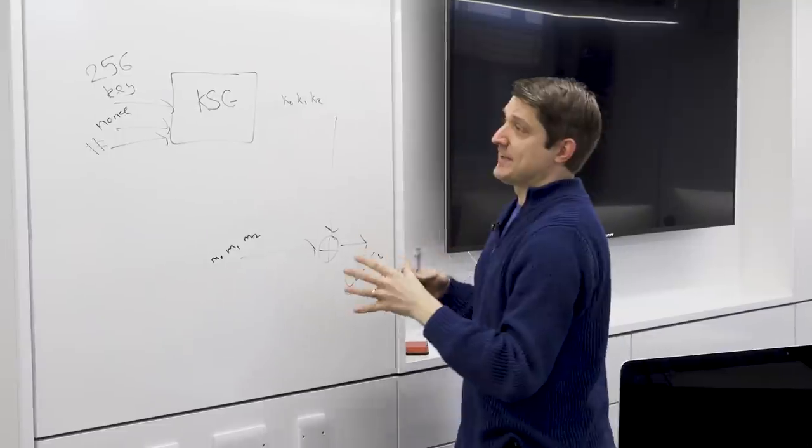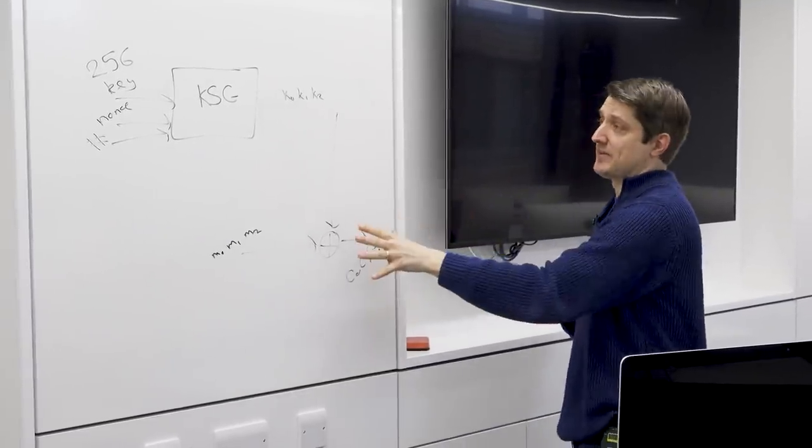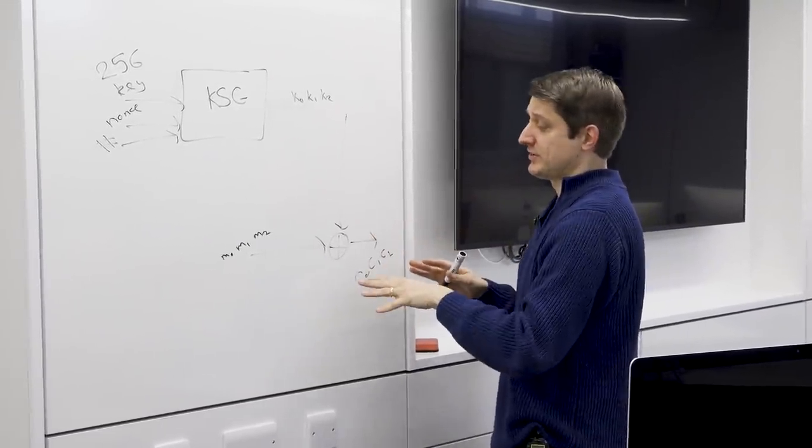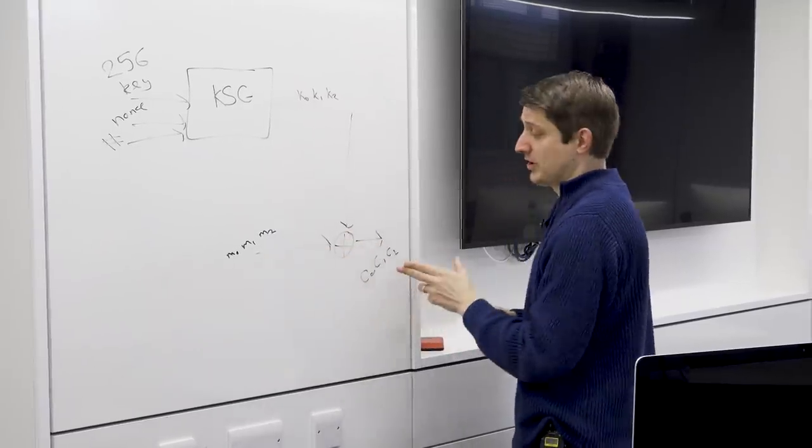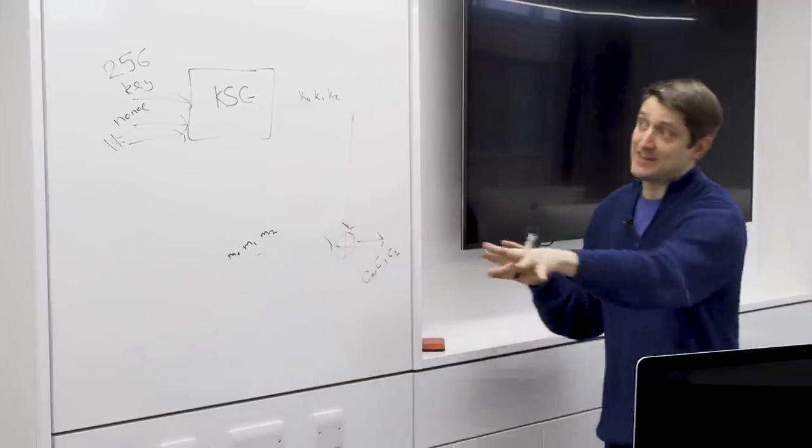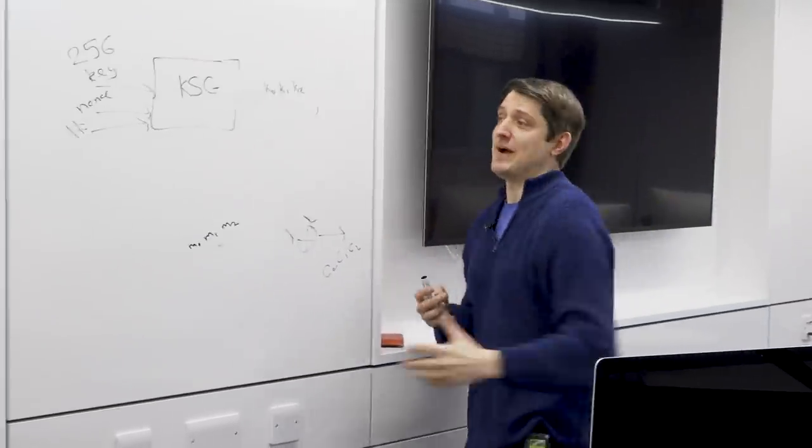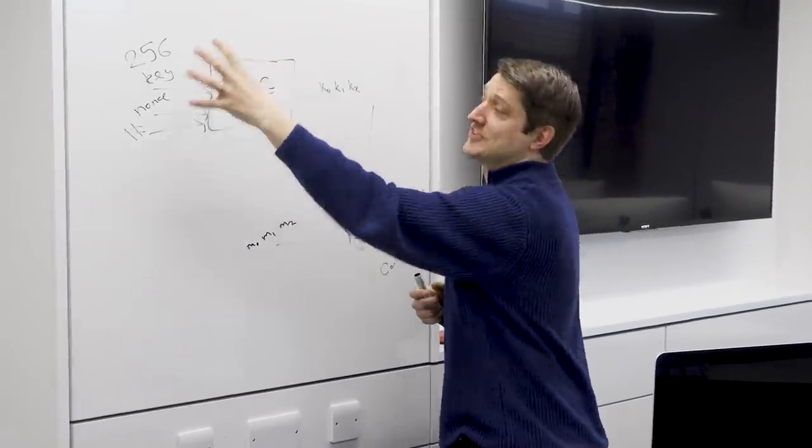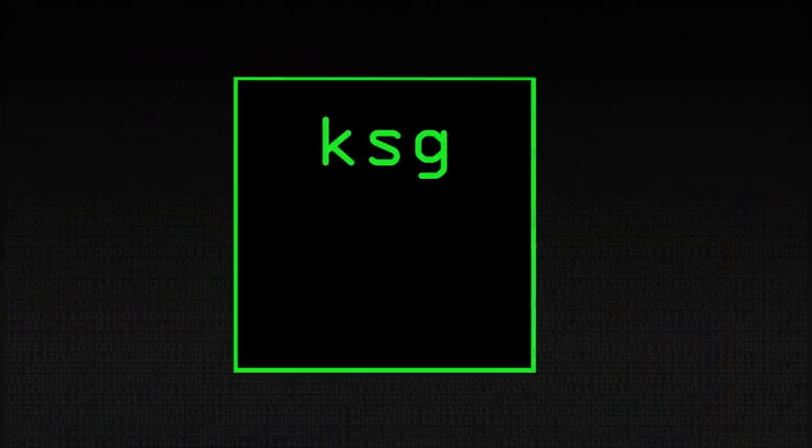The idea is that the encryption and the decryption happen exactly like this. So if we want to decrypt this, we just go this way. We just put our ciphertext in, XOR it with the same key, and out it comes. So the question then is, what is it that's interesting about what ChaCha does in here? How does it take these and turn them into key streams?